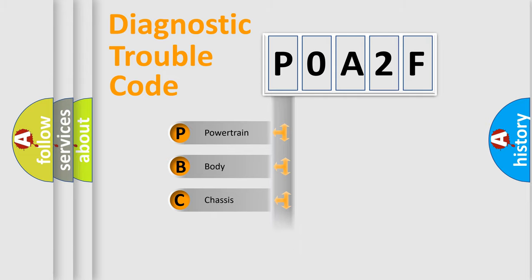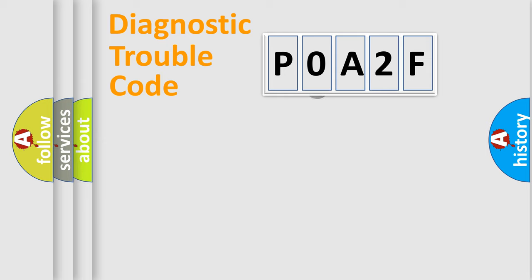We divide the electric system of automobile into the four basic units: Powertrain, Body, Chassis, Network. This distribution is defined in the first character code.